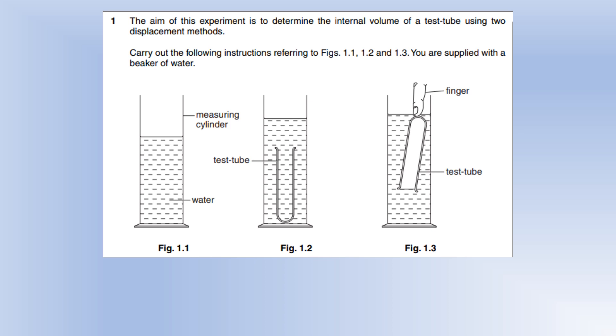We're trying to find the internal volume of a test tube and we've got diagrams to show the three different scenarios: a measuring cylinder with water, a measuring cylinder with the test tube which has been filled with water, and a measuring cylinder with a test tube which has been filled with air. Those are our different tests.